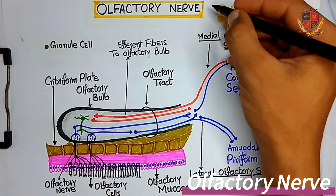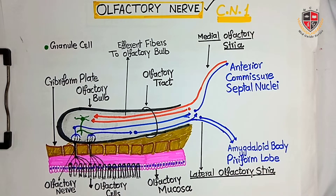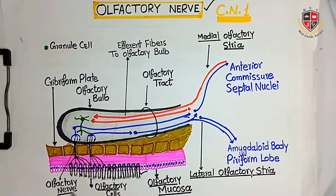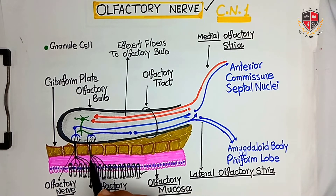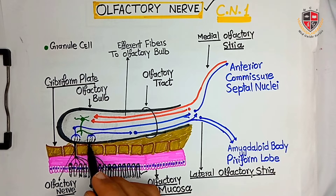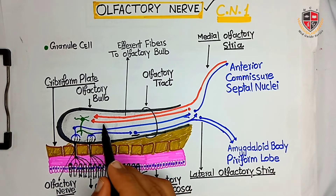The first cranial nerve is the olfactory nerve. It starts from the olfactory mucosa, which is present on the roof of the nasal cavity. From the olfactory cells, the olfactory nerve passes through the foramina of the cribriform plate of the ethmoid bone, and the fibers synapse on the anterior olfactory nucleus in the olfactory bulb.